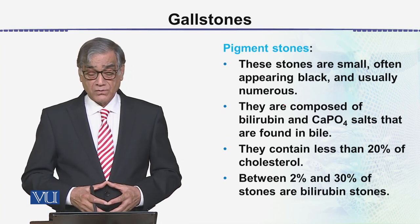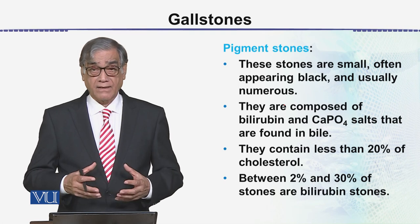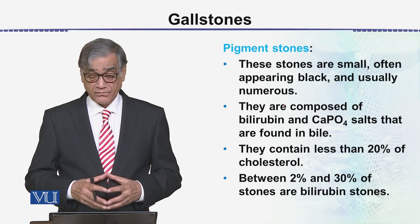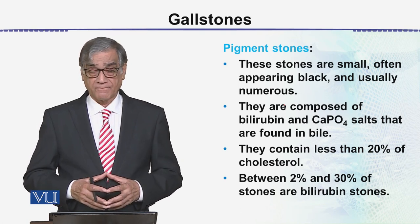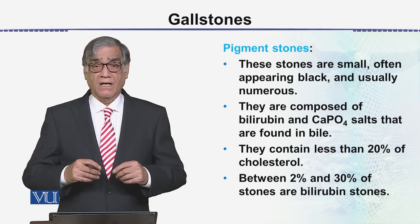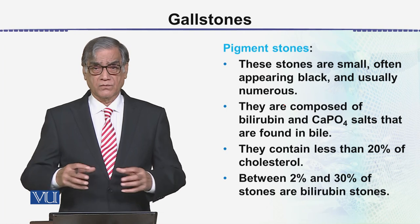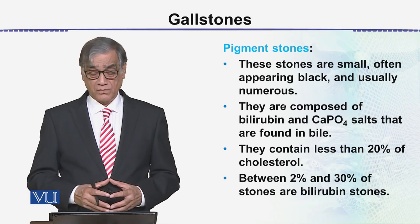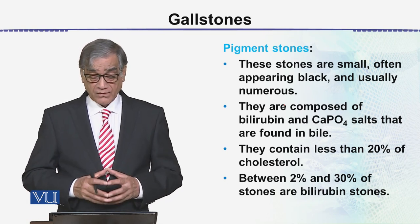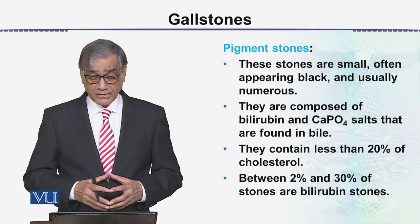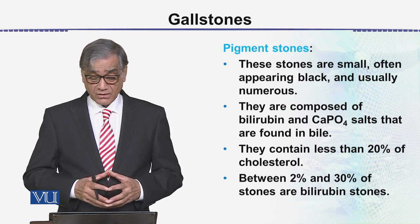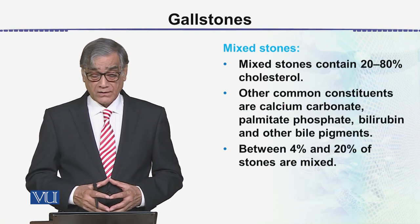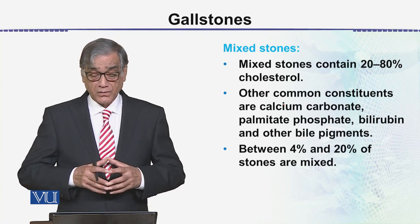Pigment stones are small, often appearing black, and usually numerous. They are composed of bilirubin and calcium phosphate salts found in bile. Through bile deposition, salts crystallize, grow, and become stones. They contain less than 20% cholesterol, and between 2–30% of stones are bilirubin stones. Mixed stones contain 20–80% cholesterol.